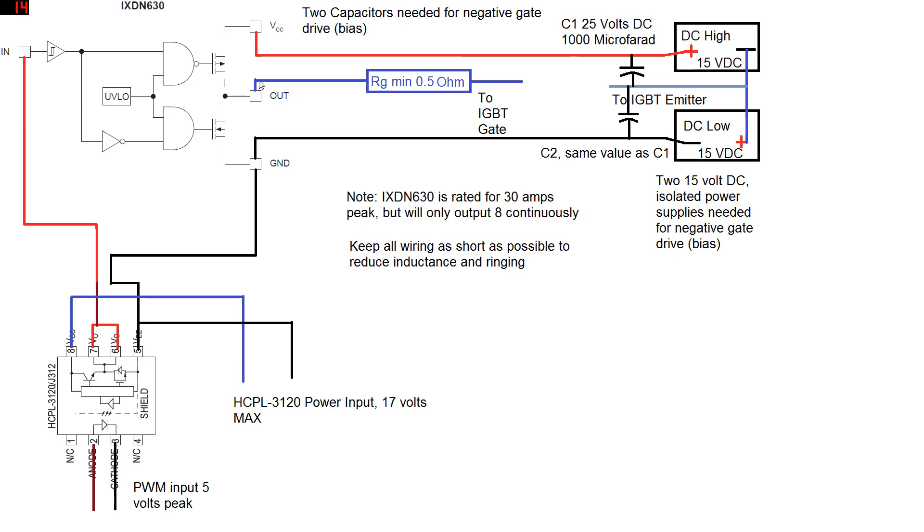Of course the output of the iXDN goes through your gate resistor that you're going to use. Now keep in mind that iXDN630 will do 30 amps peak, but it will only do 8 amps continuously. Keep that in mind when you're sizing your gate resistor. One more thing before we move on to the demonstration. I want you to take note, iXDN630 is an extremely fast gate driver. If you're having problems with turn off voltage spikes, I would not recommend using it until you get those resolved. You should also keep an eye on the IGBT's turn on current. Again, fast gate drivers tend to agitate this situation.